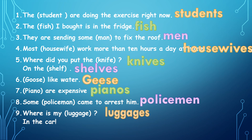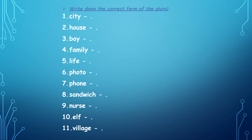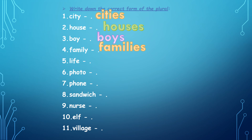Here we are going to write the plural of some words. 'City' becomes 'cities' — cross the y and put -ies. 'House' becomes 'houses', 'boy' becomes 'boys' — we don't cross the y here because there is a vowel before the y, so we just add -s. 'Family' becomes 'families' — cross the y and put -ies.